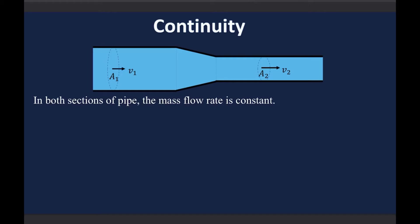The volumetric flow rate in a pipe is constant. It doesn't matter what happens to the shape of the pipe — the volume of water coming through at any given time is constant, because mass is conserved. So in a certain time delta T, at part A on the left side of the pipe, the water goes through a certain volume, which is a short length. But at point 2, because the pipe is thinner, it has to cover more length in a given time for the mass flow rate to be the same.